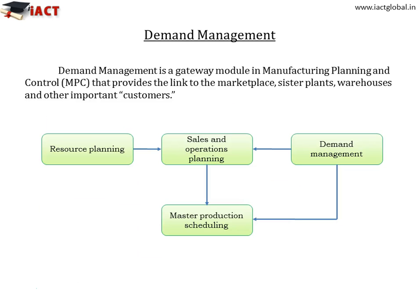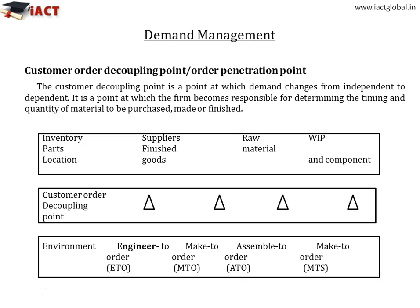Demand management includes activities that range from determining or estimating demand from customers through converting specific customer orders into promised delivery dates. It is a gateway module in manufacturing planning and control, providing the link to the marketplace, system plans, warehouses and other important customers. This figure provides a means for visualizing the customer order decoupling point as it might move from finished goods inventory through the company all the way back to the supplier, giving rise to various categories of manufacturing environments.